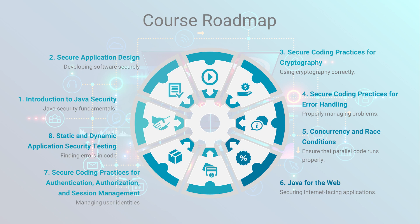Fifth, we'll discuss concurrency and race conditions — parallelized code and ensuring that parallel code runs properly and that the various simultaneous threads of execution aren't fighting over shared resources. Sixth, we're going to talk about Java for the web, discussing internet-facing applications or ones that just use the network.